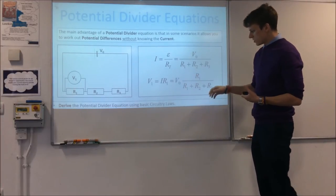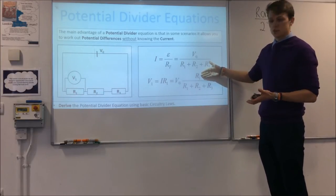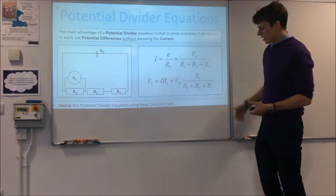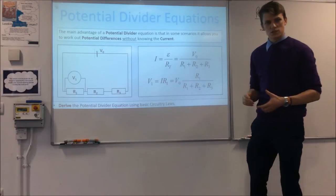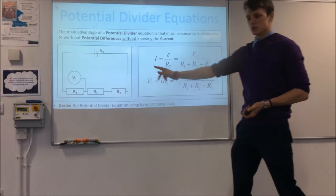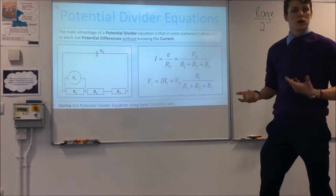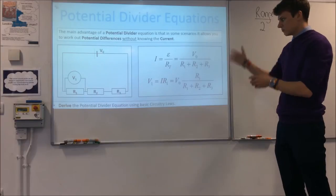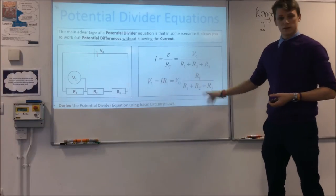On the top line, you have the resistance that you're interested in finding the potential difference across. On the bottom line, you have the sum of all the resistors that form the potential divider — in this case, three, though very often you might have two. That's how we derive this equation, and that's what the equation looks like.